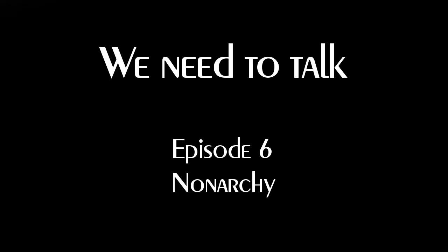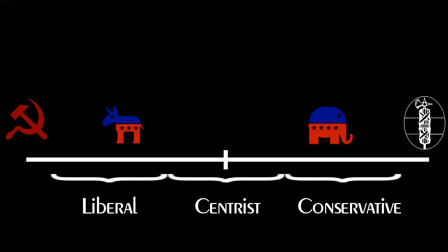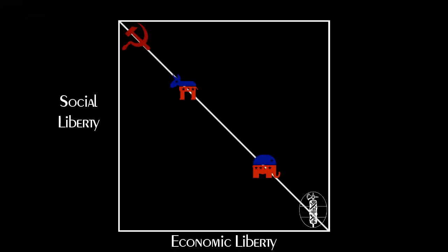Hey, this is Jeff, and we need to talk. Last episode, we demonstrated why the one-dimensional model of political thought, the left-right spectrum, is obsolete and dangerously misleading. We introduced the two-dimensional model, with axes representing economic liberty and social liberty, and saw that real-world political movements don't stay on the traditional left-right line.